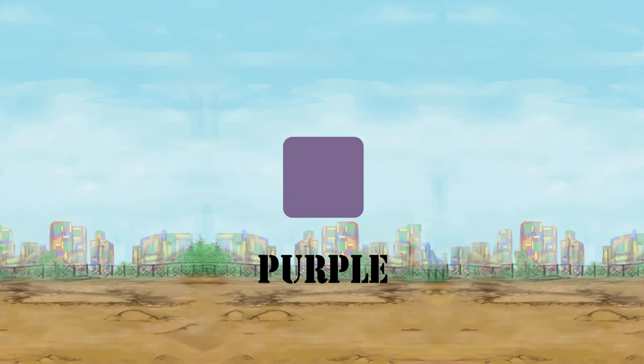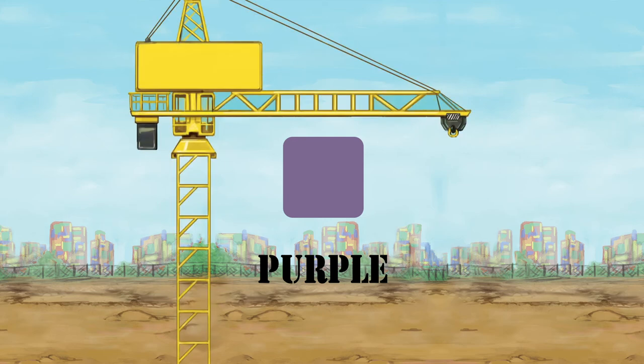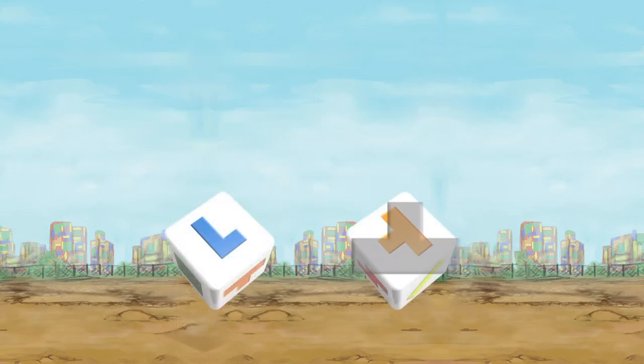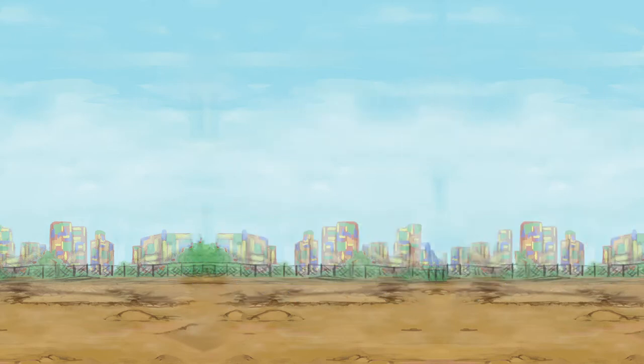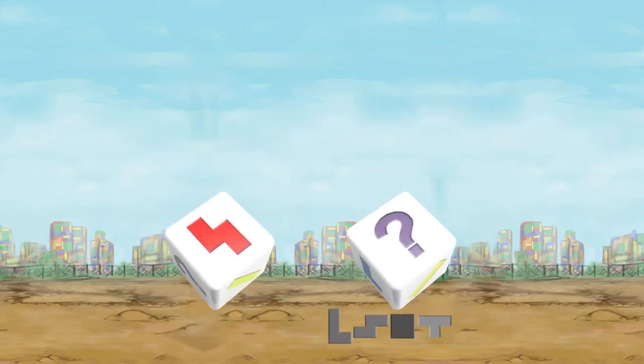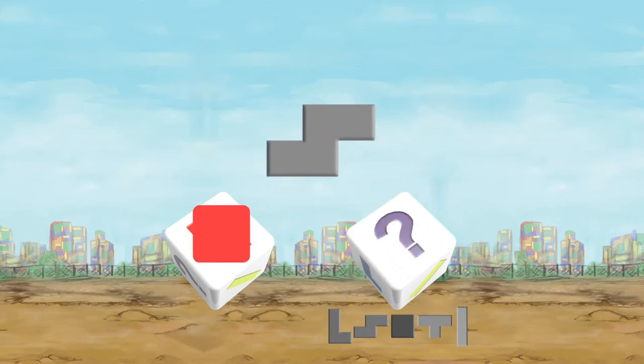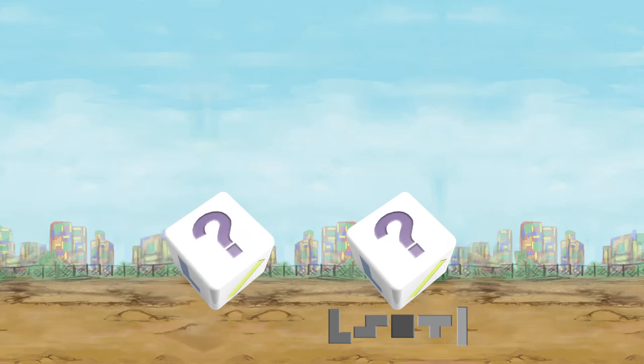First choose a die to be your block shape, then the other die will be used for its color. If you have one question mark die, then you must make it into one of the five shape blocks and use the other die for the color. If you have both dice as question marks, then you can make any block of any color.